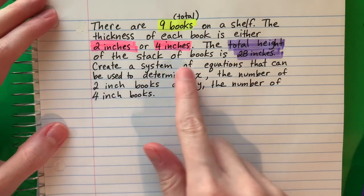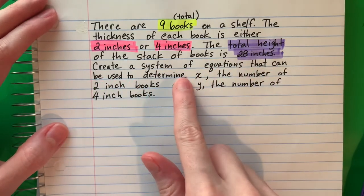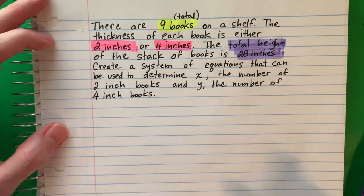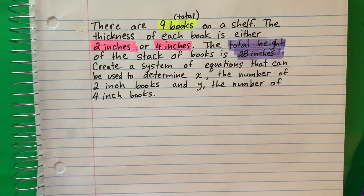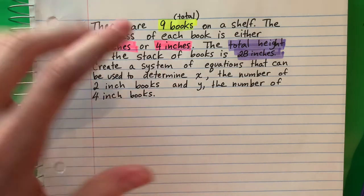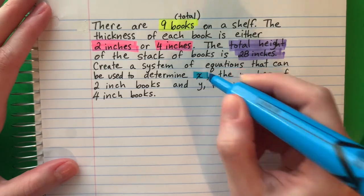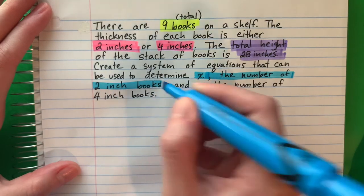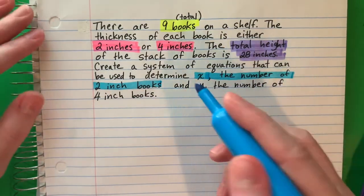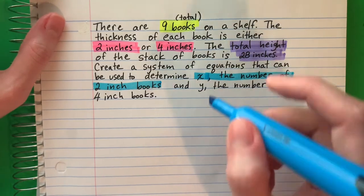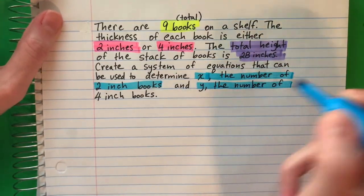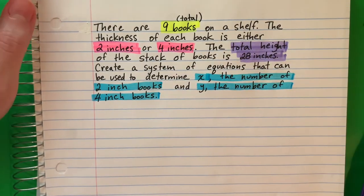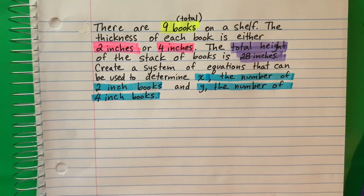Create a system of equations that can be used to determine x, the number of two-inch books, and y, the number of four-inch books. So x represents the two-inch books, and y represents the number of four-inch books.